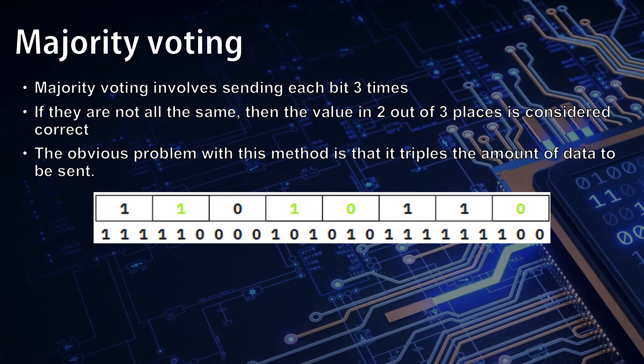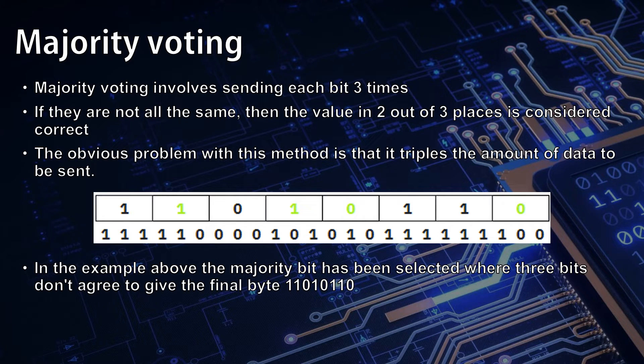If we have a look in this example here, the first bit, 1, 1, 1, are all 1's, so we know it's going to be a 1. But when we get 1, 1, 0, we use majority voting to say 2 out of 3 were 1's, so this is actually going to be a 1. After selecting the majority bit in each case where the three bits don't agree, the final byte we get is 1, 1, 0, 1, 0, 1, 1, 0.